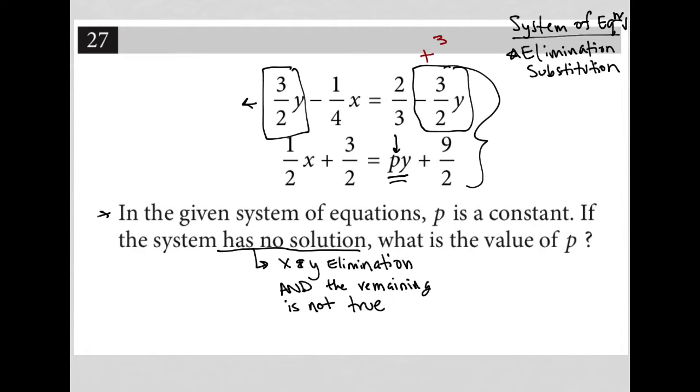So I'm going to add three halves Y to both sides of this first equation. Three halves Y plus three halves Y is six halves Y, which would be equal to three Y. Six halves equals three. So this becomes three Y minus one fourth X equals two thirds.